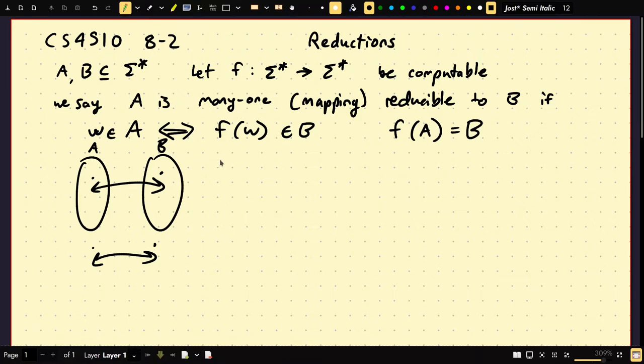So, we can write this then as A less than or equal subscript M, B. So, why do we care about this? Well, there's actually some very useful properties about this. So, if A is reducible to B, and B is decidable, then that must imply that A is decidable.